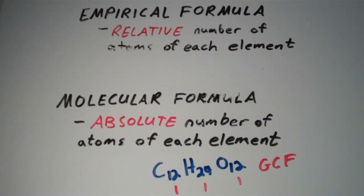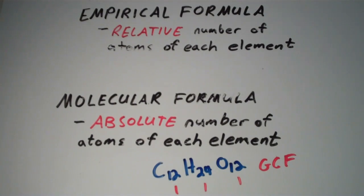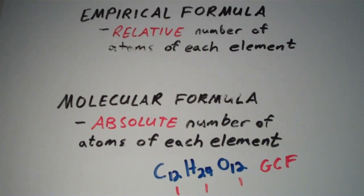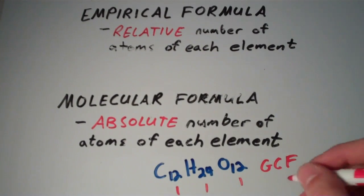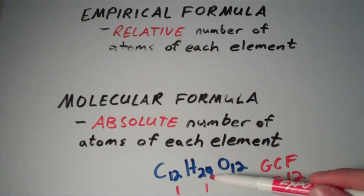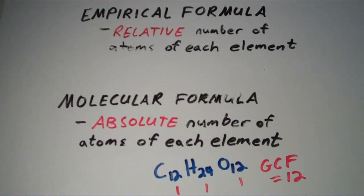That's usually done by dividing by the smallest value. If you don't get a whole number, you can divide by half the smallest value, then a third, and so on. The greatest common factor of 12, 24, and 12 is 12, so I'll divide all of the subscripts by 12 to get my empirical formula.